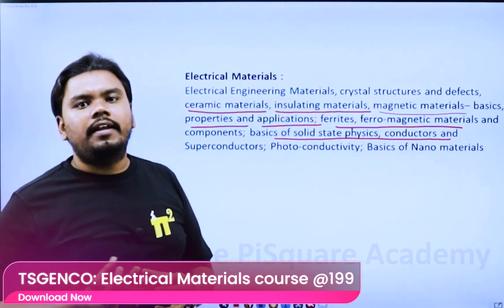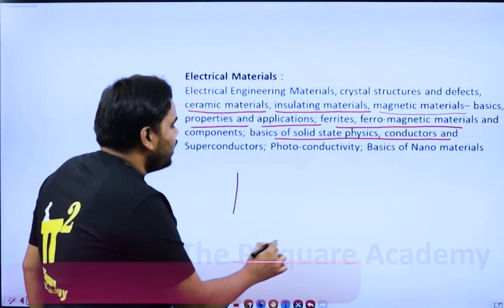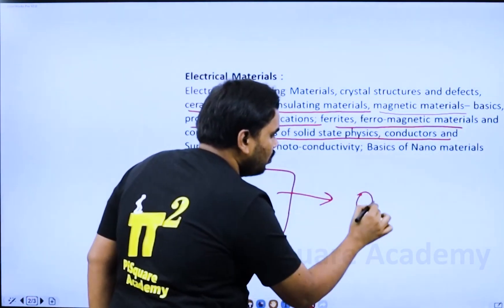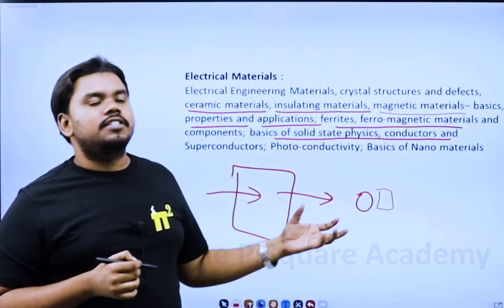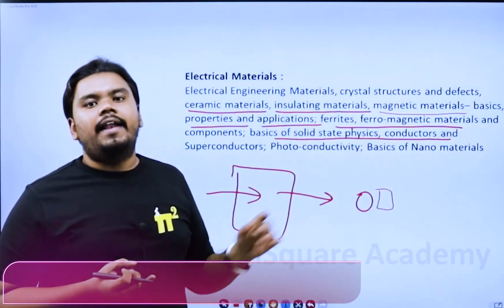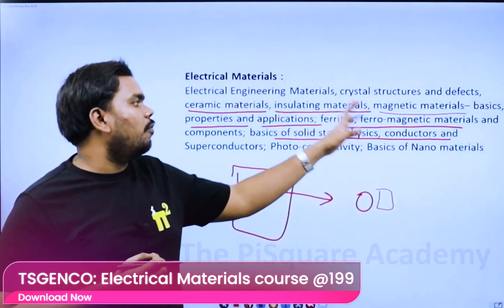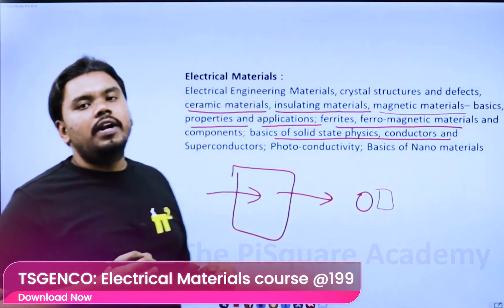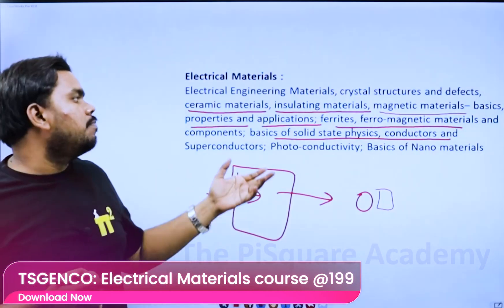Technology is changing such that materials are reducing in size. When you observe any material, its size will get reduced. That reduction in size is associated with several kinds of properties — not only mechanical or electrical properties, but all kinds: ferromagnetic, conductivity, insulating, and magnetic properties. Every property is going to be affected by these materials.